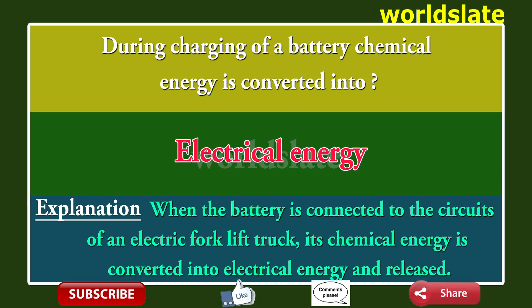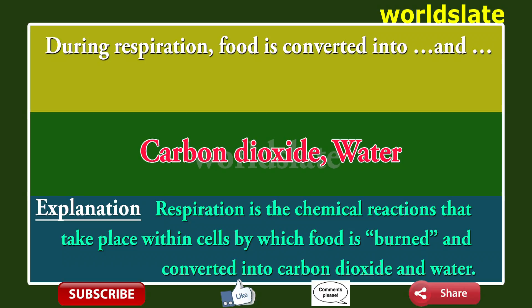Question: During charging of a battery, chemical energy is converted into what? Answer: Electrical energy. Explanation: When the battery is connected to the circuits of an electric forklift truck, its chemical energy is converted into electrical energy and released.